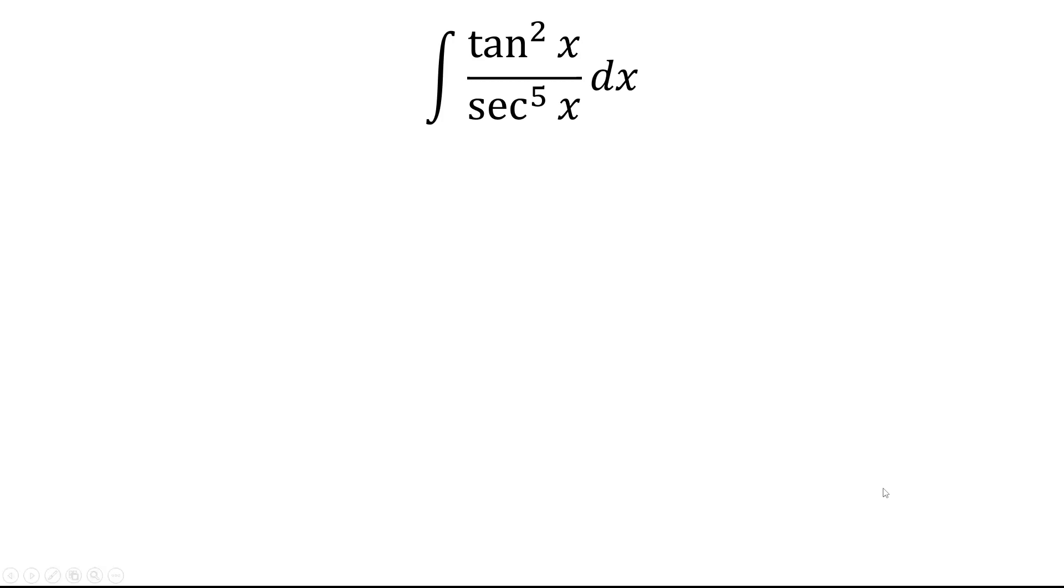Now we have this set up to use a u substitution. We'll let u equal sine x. So du is cosine x dx. So that's u squared minus u to the fourth du.